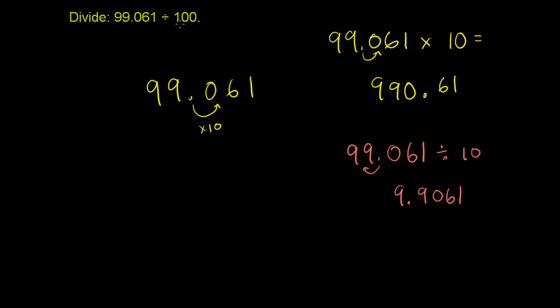So when we divide by 100, we're dividing by 10 twice. We're shifting to the left twice. So if we start with 99.061 divided by 100.